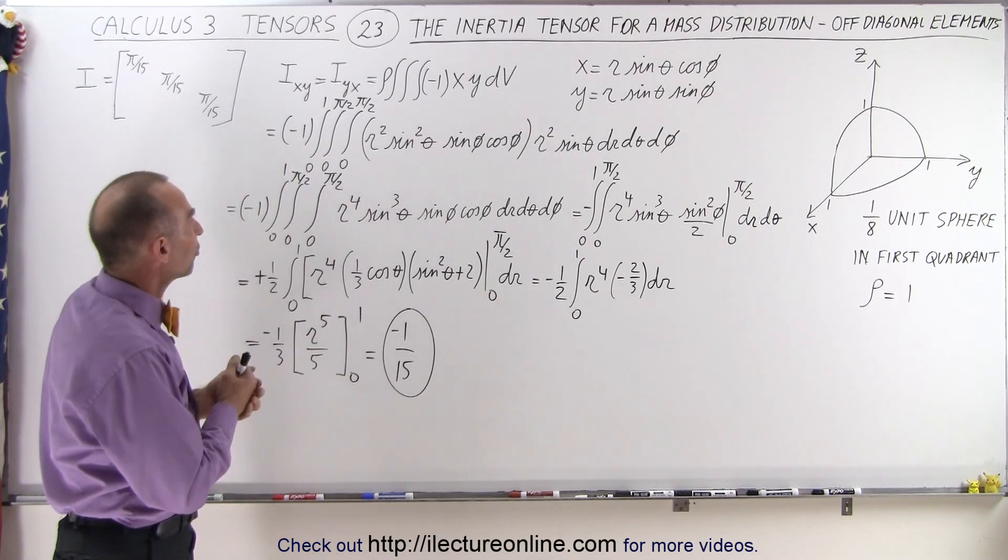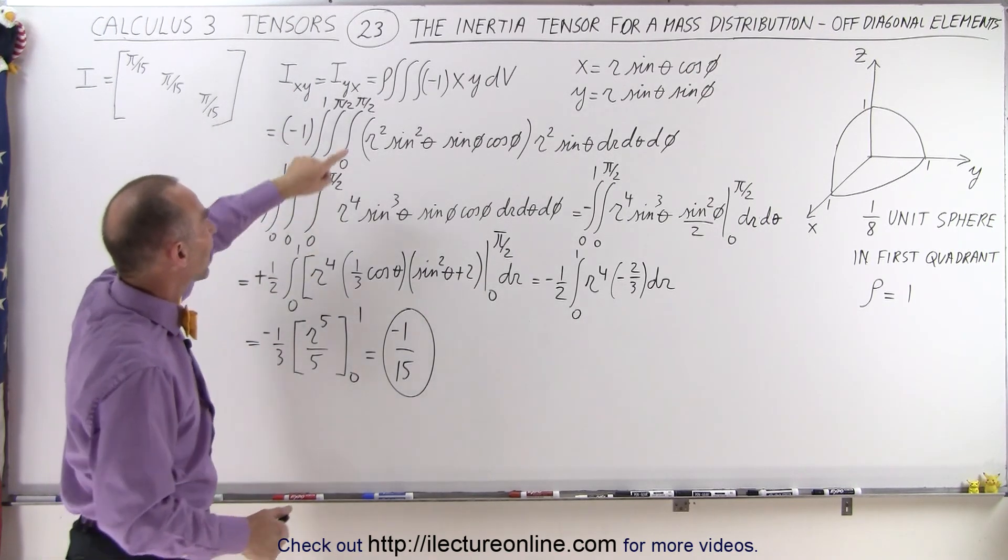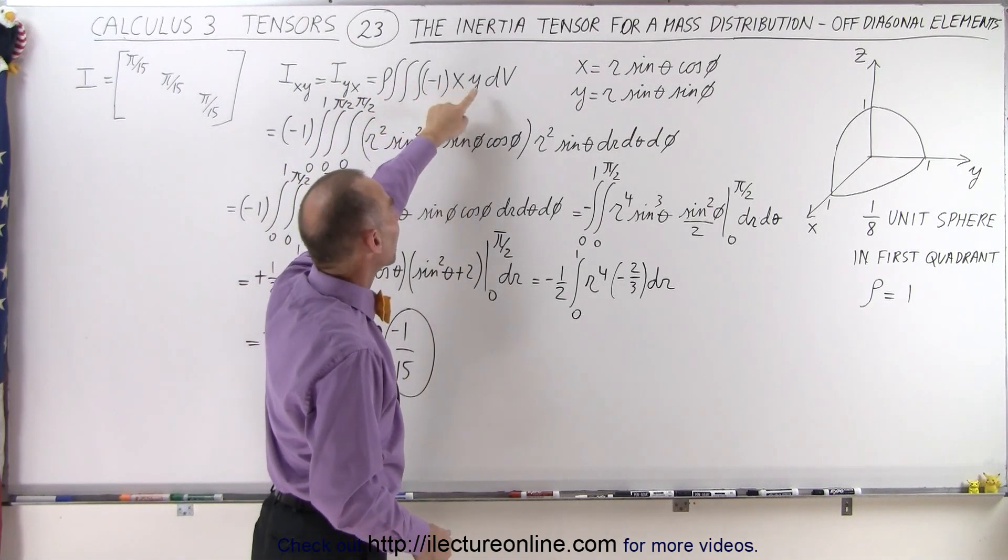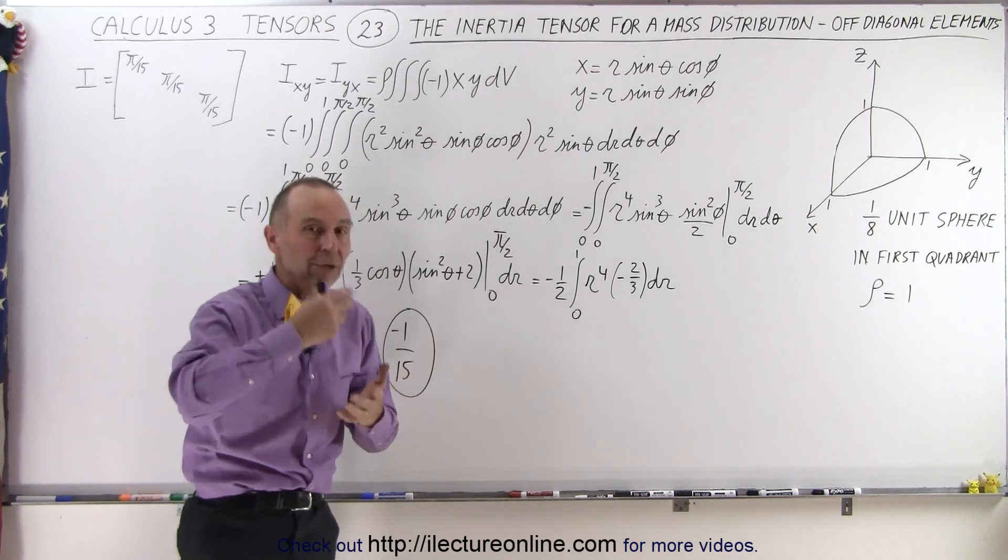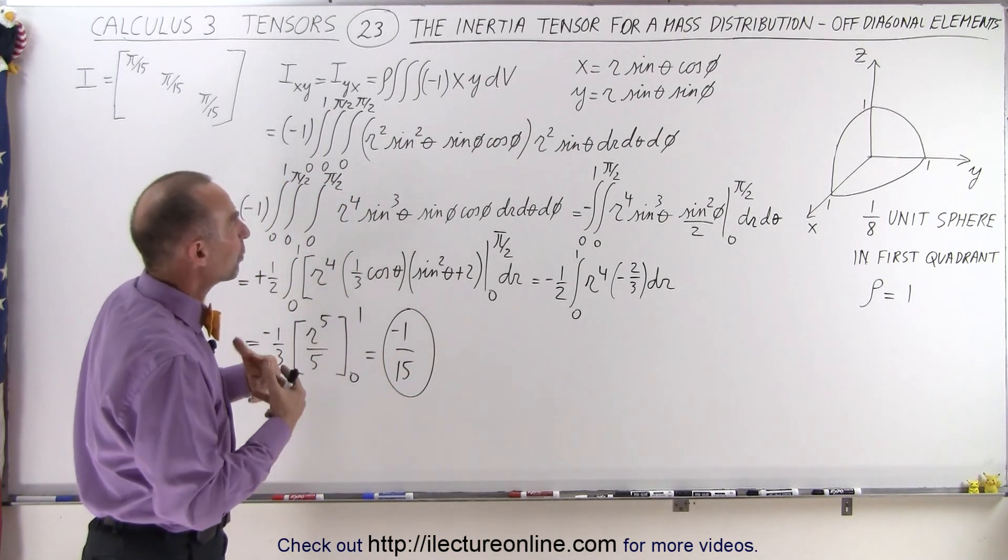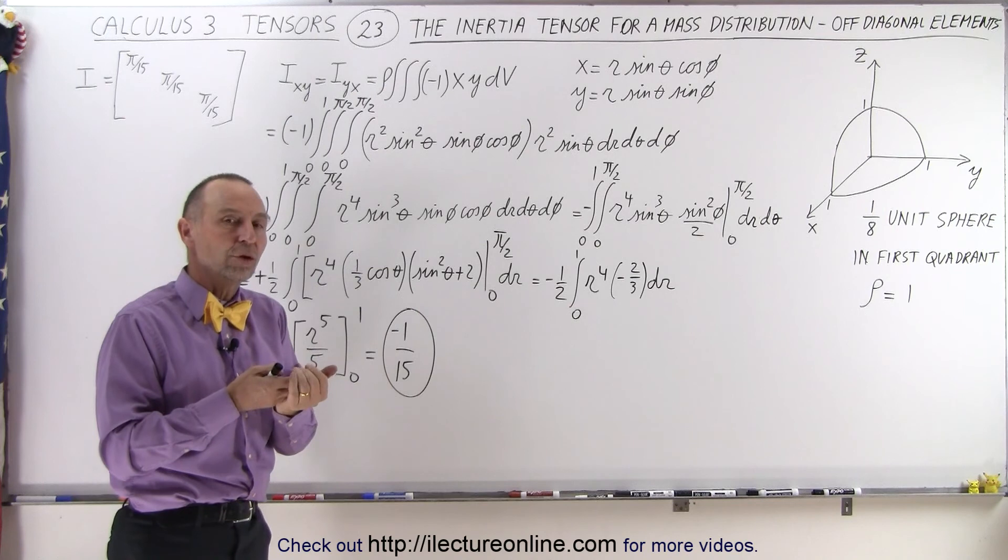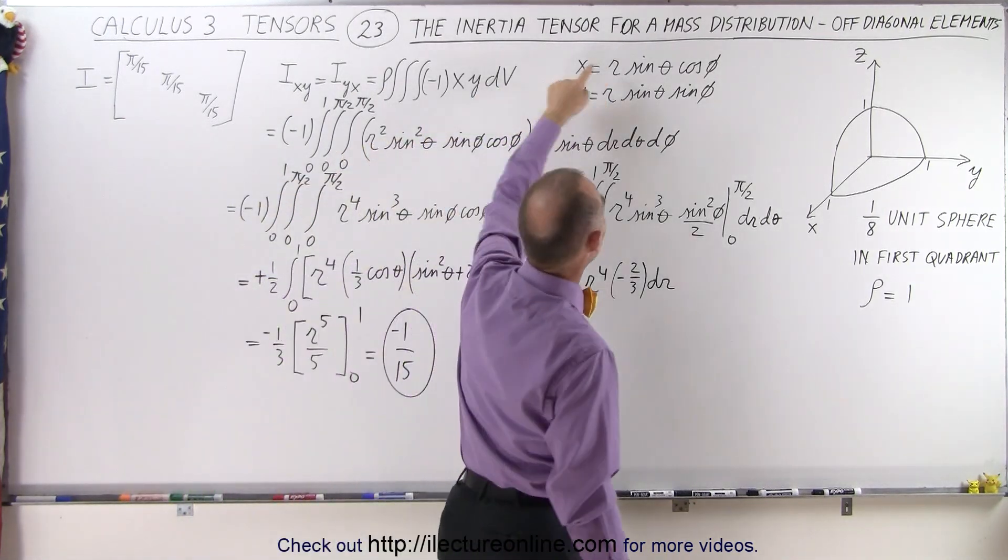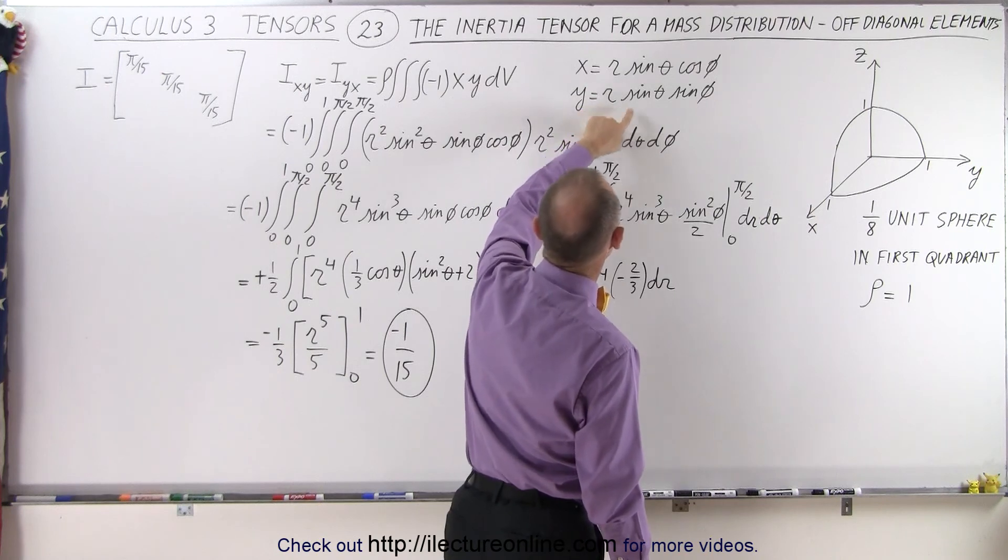So let's start with the general formula that we take the density times negative 1 times x times y times dV, and we're going to integrate over that volume. Realizing when we change from Cartesian coordinates to spherical coordinates that x can be expressed like this, and y can be expressed like this.